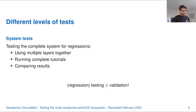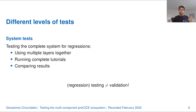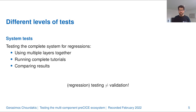If we look at more than one software package, or one software package used for a specific purpose, we want to test the complete system. In terms of preCICE, we want to run complete simulations combining multiple solvers and check that the results do not change. We call this system tests — an alternative name would be regression tests. Make sure to understand the difference: testing means testing that the behavior does not change unintentionally. Validation is a completely different chapter that we are doing, but I will not talk about this today.